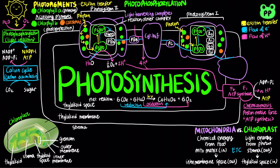Lastly, ferredoxin donates electrons to NADP+, reducing it to NADPH, which is catalyzed by NADP+ reductase, completing the light reaction. The NADPH generated by NADP+ reductase and the ATP generated by ATP synthase will provide energy for biosynthesis of carbohydrates in the Calvin cycle.